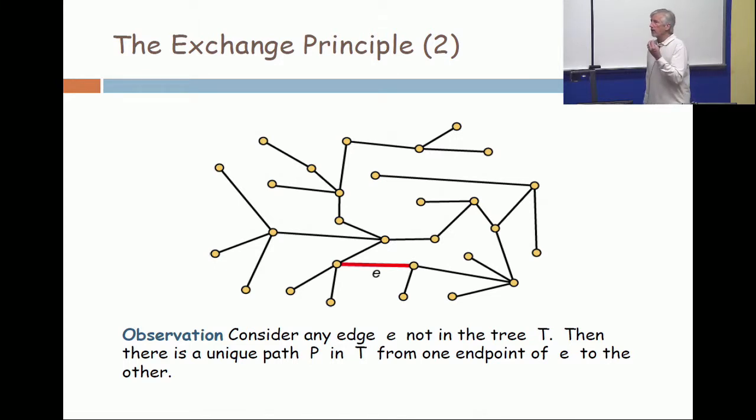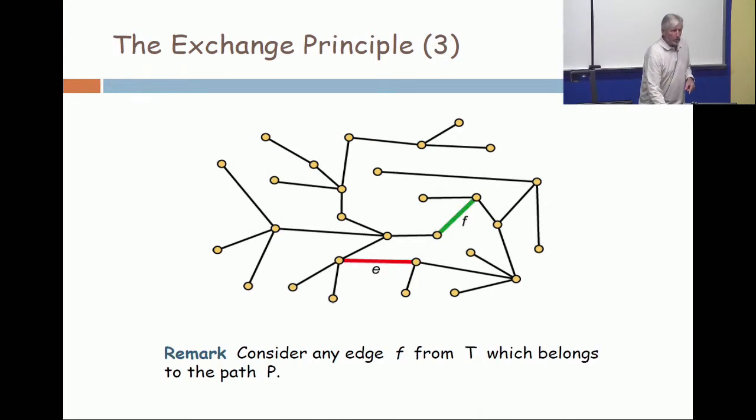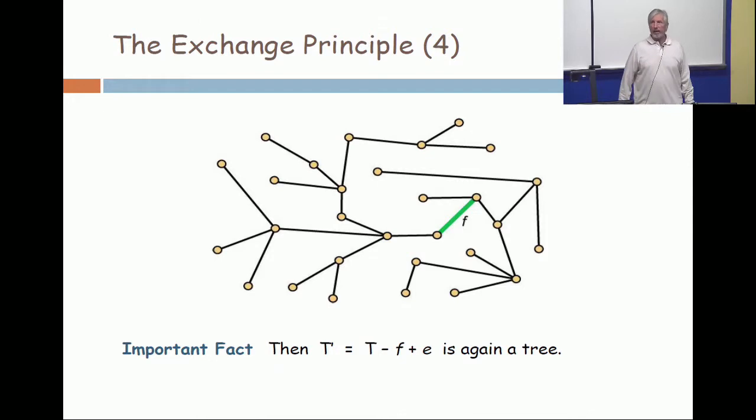The ones with non-zero coefficients are the ones around the cycle. And if you identify anyone with a non-zero coefficient, like F, you throw away F and insert E, and you have a new basis, a new spanning tree. That's the exchange principle for spanning trees, and it should remind you of linear algebra.